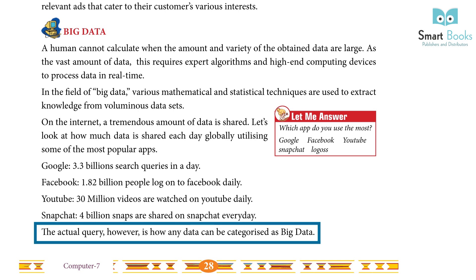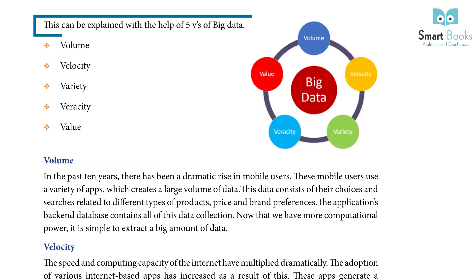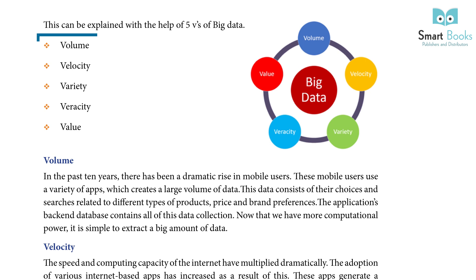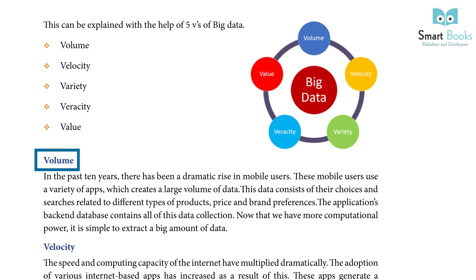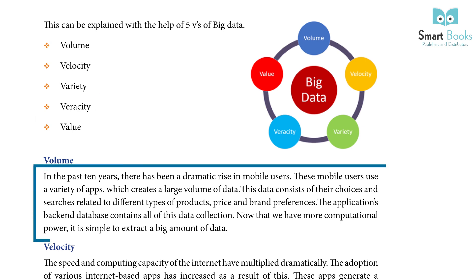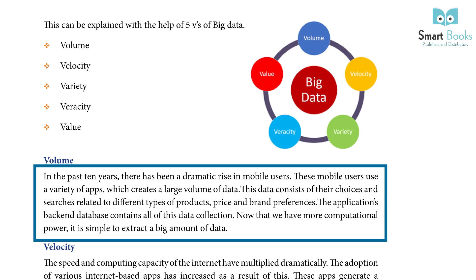The actual question, however, is how any data can be categorized as big data. This can be explained with the help of the 5 V's of big data: Volume, Velocity, Variety, Veracity, and Value.